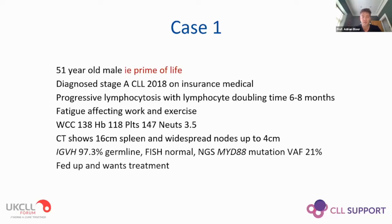His lymphocytosis progressed with a doubling time of six to eight months; he was becoming fed up with it. His blood count was as shown, he had widespread moderate volume lymphadenopathy. In terms of prognostic markers, he had a mutated IGHV sequence, normal FISH on conventional panel, and an NGS panel showing an MYD88 mutation with moderate variant allele frequency - present in about 5-10% of CLL patients and not deemed to confer adverse prognosis.